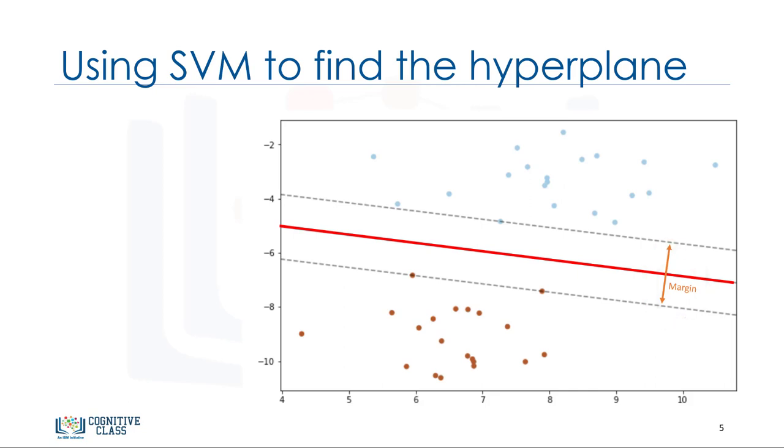So, the goal is to choose a hyperplane with as big a margin as possible. Examples closest to the hyperplane are support vectors. It is intuitive that only support vectors matter for achieving our goal, and thus, other training examples can be ignored. We try to find the hyperplane in such a way that it has the maximum distance to support vectors. Please note that the hyperplane and boundary decision lines have their own equations.